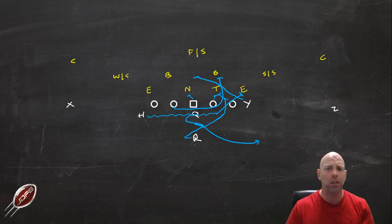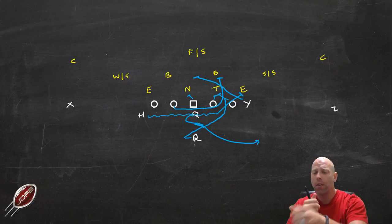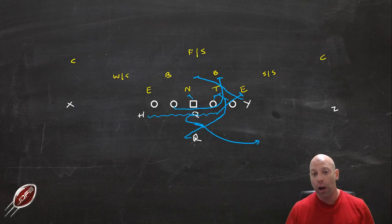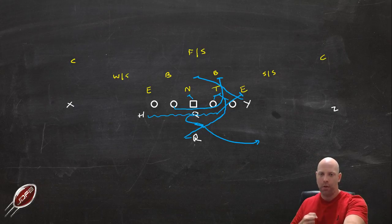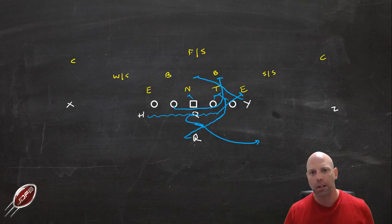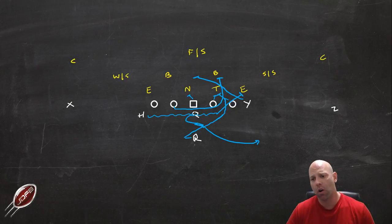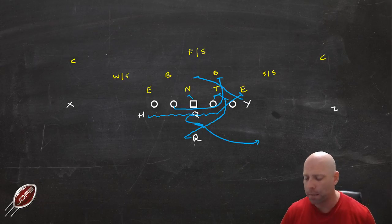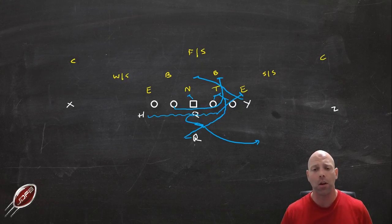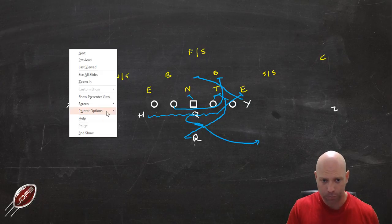When you run an I-formation iso play, the timing is already built in — he's already behind the fullback, running downhill. The timing is perfect most of the time, as long as you don't have your back too deep. If your back is too deep, you're going to force the isolation block to happen early, forcing these guys to stay on their blocks too long. What we're going to do is set it up so we take the handoff and get in behind that guard — that's the goal. We adjust that timing by depth, by the length of the counter step, and by alignment.